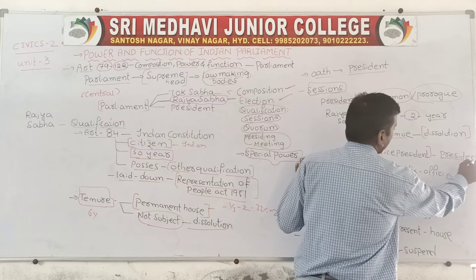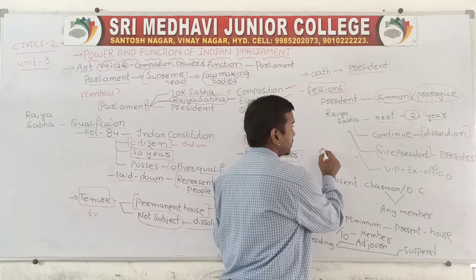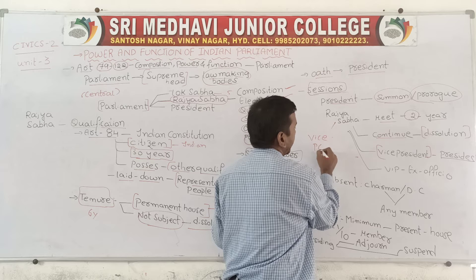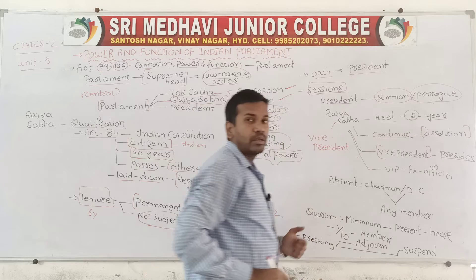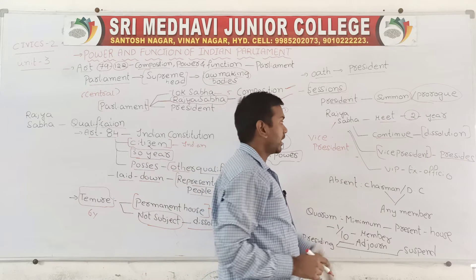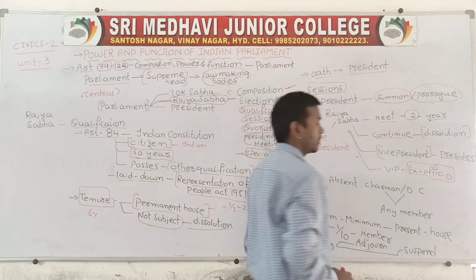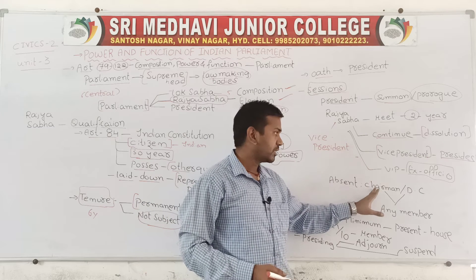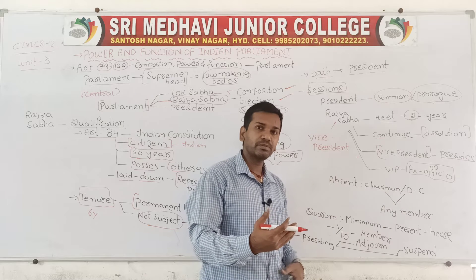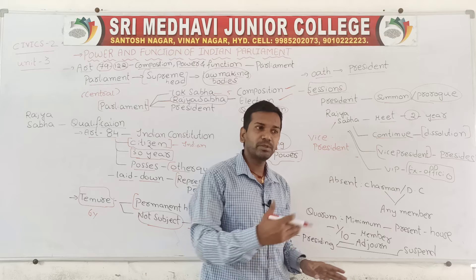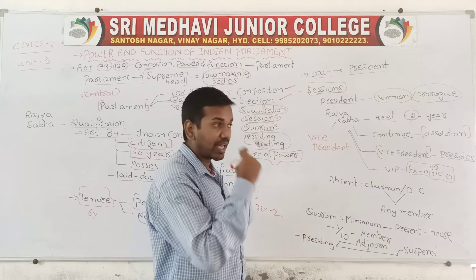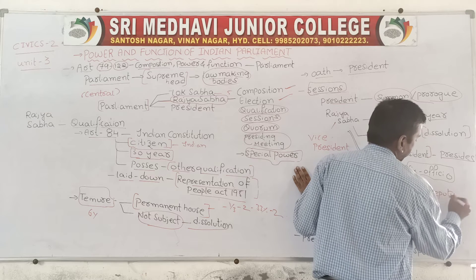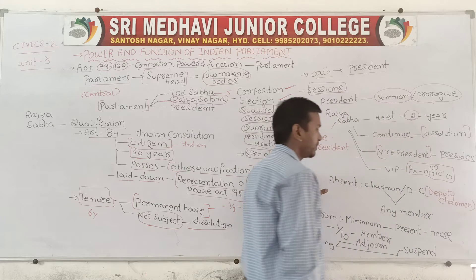The Vice President acts as the chairman of Rajya Sabha and presides over its meetings as an ex-officio chairman. In the absence of the Vice President, the Deputy Chairman can act as chairman and conduct the meeting.